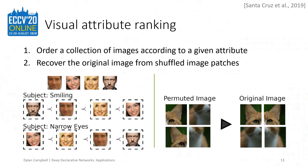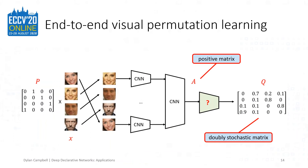In this paper, the authors address the problem of visual attribute ranking, which involves ordering a collection of images according to an attribute such as smiliness, and also the problem of self-supervised learning using the proxy task of recovering the original image from shuffled image patches. Here is the network diagram in question. The layer with the question mark is, or can be, a declarative layer that solves the transport polytope projection problem, for example using the Sinkhorn algorithm and implicit differentiation in the backward pass.